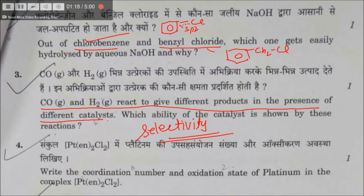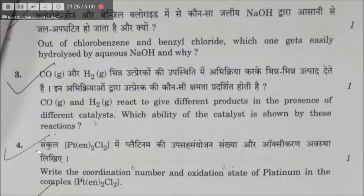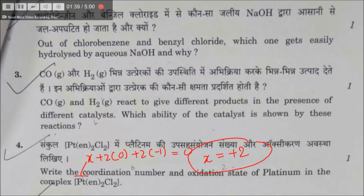In this compound we have to find the oxidation state of platinum. If we say it is X, plus two ethylenediamine with zero oxidation state, the sum equals zero, giving 2 + 2 = 0, so platinum is in the form of Pt²⁺. For coordination number, there are two ethylenediamines each forming two bonds, giving four bonds collectively.